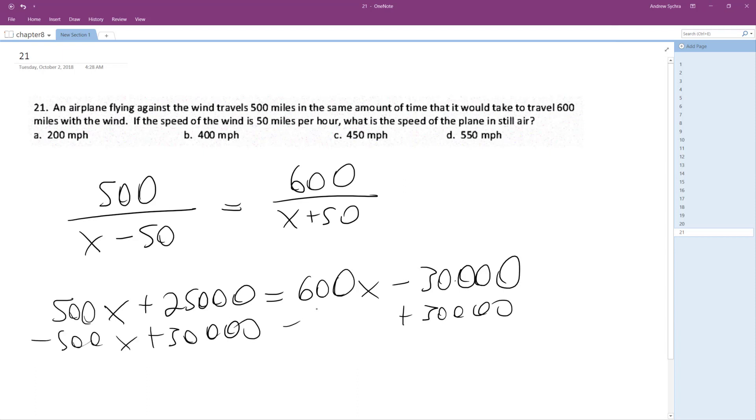Minus 500X, so we get 100X is equal to 55,000. Divide by 100, X is equal to 550 miles per hour.